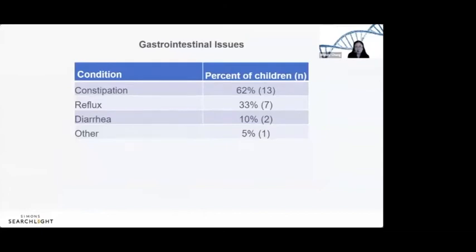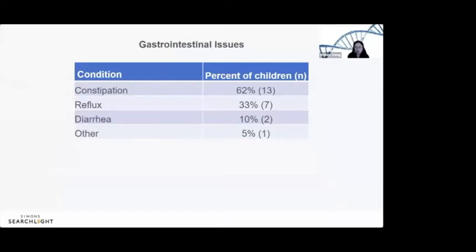There are also gastrointestinal issues. Nerves go from the brain to the intestine, and sometimes things move too fast — leading to diarrhea — or too slow — leading to constipation. Some individuals have both on different days. Heartburn or reflux responds to standard medications. For diarrhea and constipation, families often find dietary interventions or stool softeners and laxatives helpful.